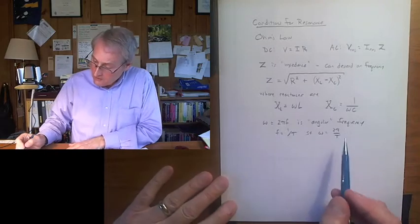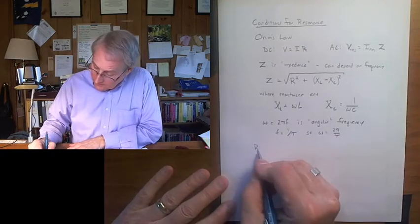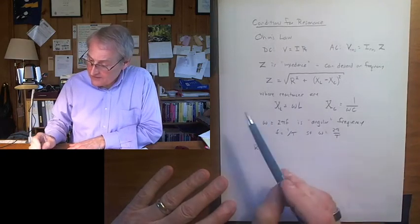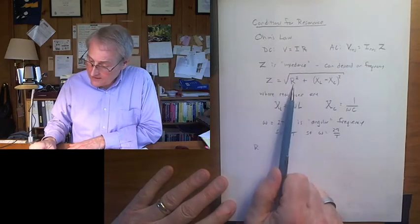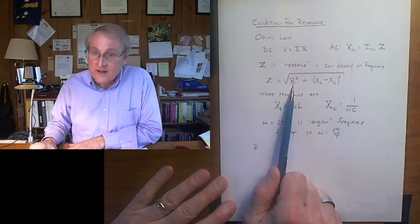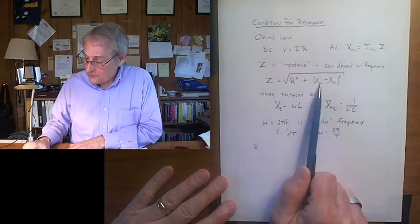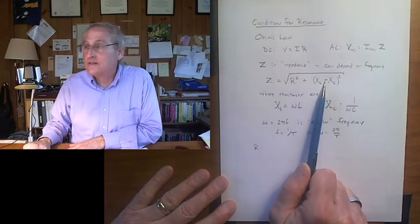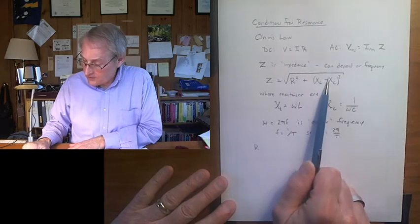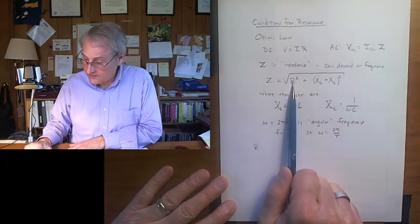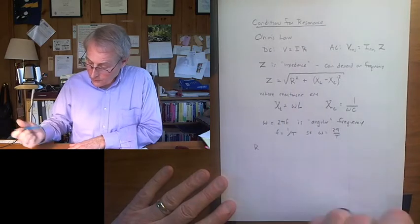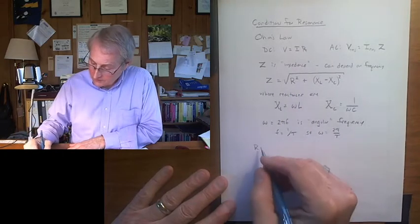Okay, so now, resonance. The condition for resonance is that the impedance be the smallest possible. Now it can't get any smaller than the resistance, but when these two cancel, because that's a minus sign, when these two cancel, this part goes away, leaving only the resistance, the resistive part, which doesn't depend on the frequency. So resonance occurs when impedance is minimized.